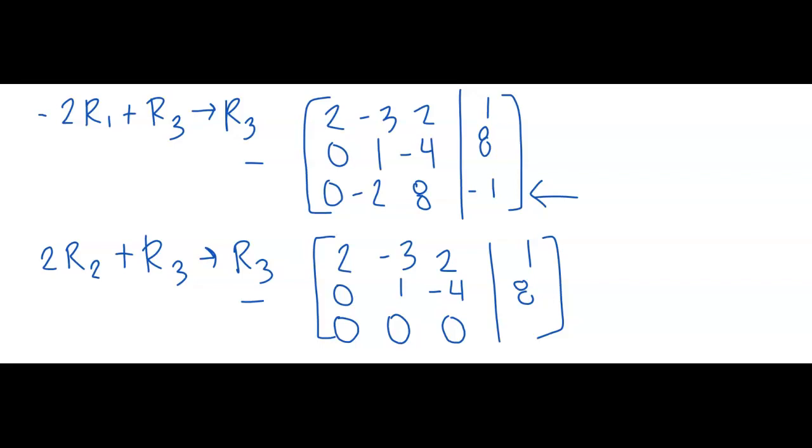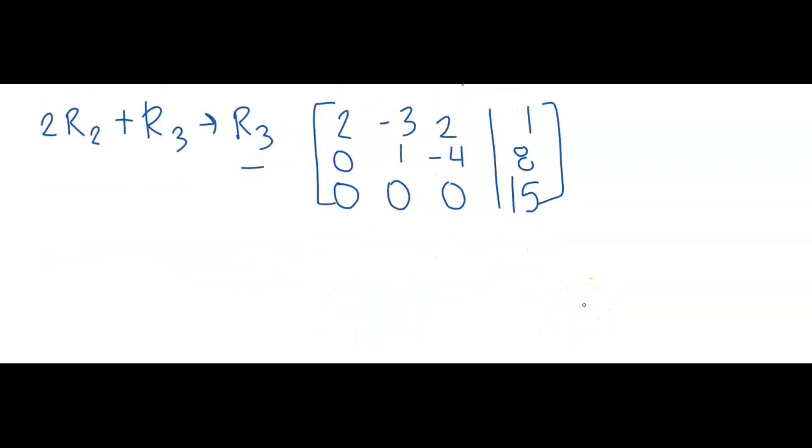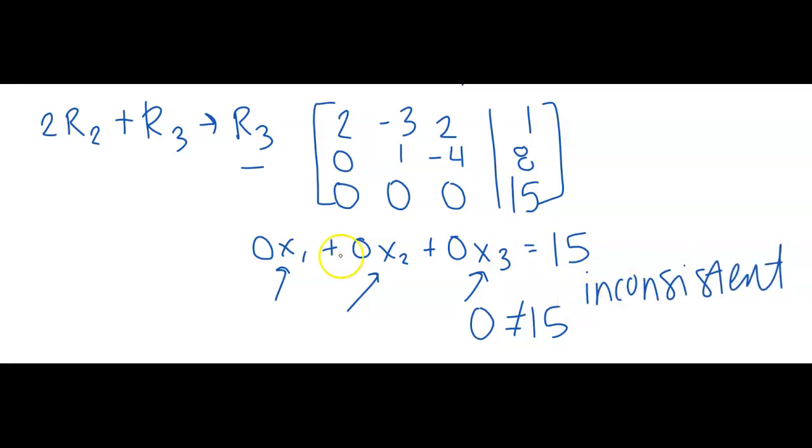If I take two times eight and add one, I get 15. So I get that zero x1 plus zero x2 plus zero x3 has to give me an output of 15. But no matter what numbers I plug in, zero times that number gives me zero plus zero plus zero. Zero is never equal to 15. So we call this inconsistent, meaning a solution does not exist.